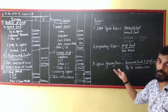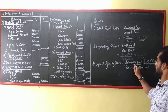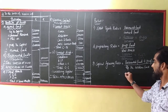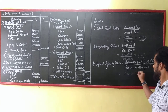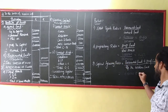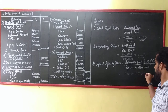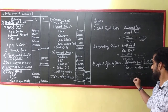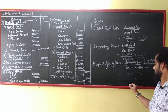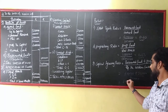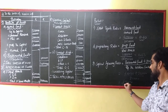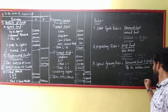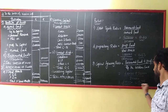Then, capital gearing ratio. It is equal to borrowed fund plus preference capital upon equity shareholders fund. So, borrowed fund is how much? 4 lakhs. Plus preference capital is how much? 2 lakhs. Upon my equity shareholders fund — 8 lakhs. Correct? So that is equal to 6 lakhs upon 8 lakhs — that is equal to 0.75. Right? Simple.